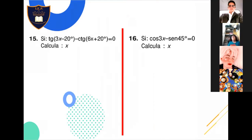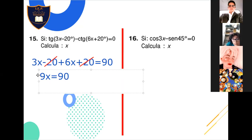Problema 15: tangente de 3X menos 20 menos la cotangente de 6X más 20 igual a 0. Sabemos que este pasa a sumar. Por lo tanto, estos ángulos son complementarios. Entonces, de frente, ponemos 3X menos 20 más 6X más 20, eso es igual a 90. ¿Qué hacemos? Cancelamos al 20 negativo con el 20 positivo. Y ponemos 3X más 6X, 9X. Y eso es igual a 90. Inmediatamente vemos que 90 entre 9 es 10. Y es lo que me están pidiendo, el valor de X.